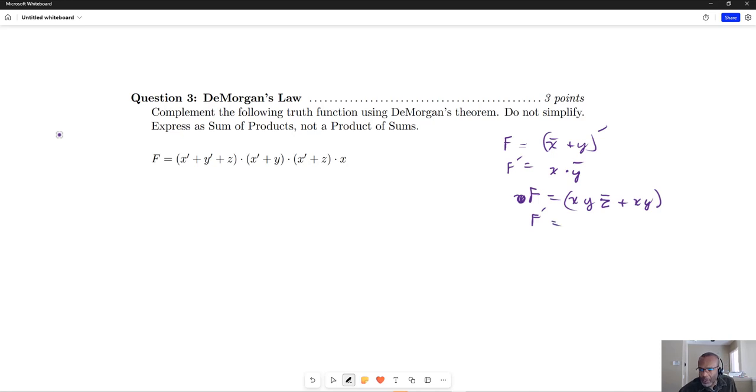Then it would be similar to what we did before. That first term gets complemented. I like to think of the operation being complemented, so the OR becomes an AND, and then the second term gets complemented as well.